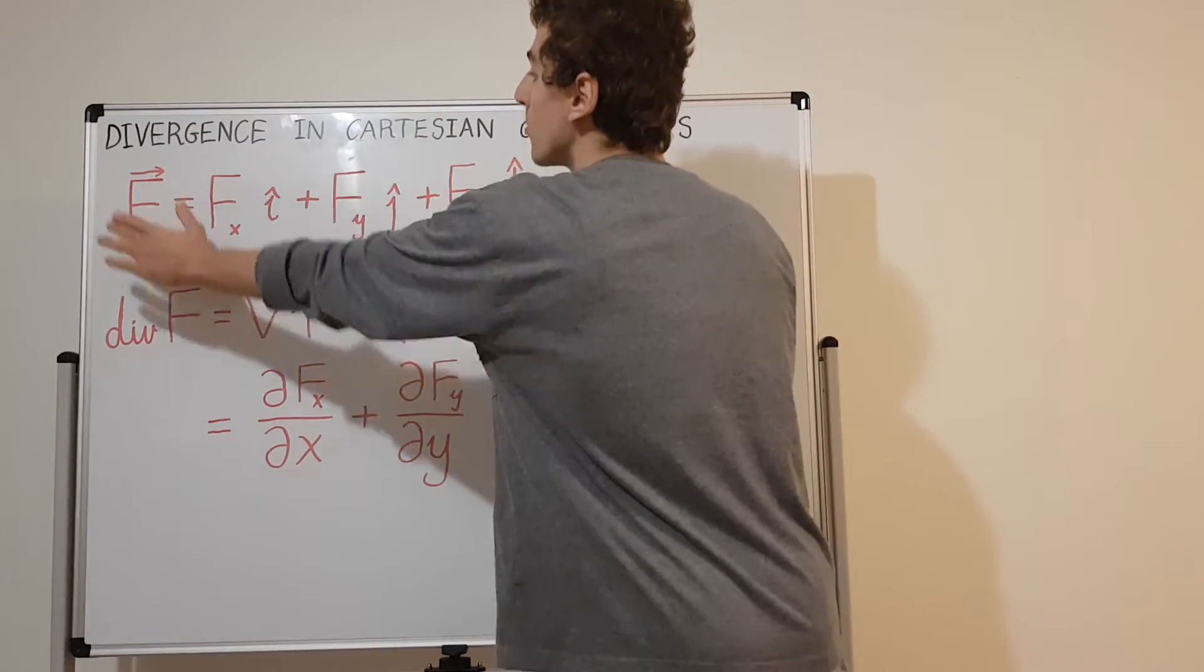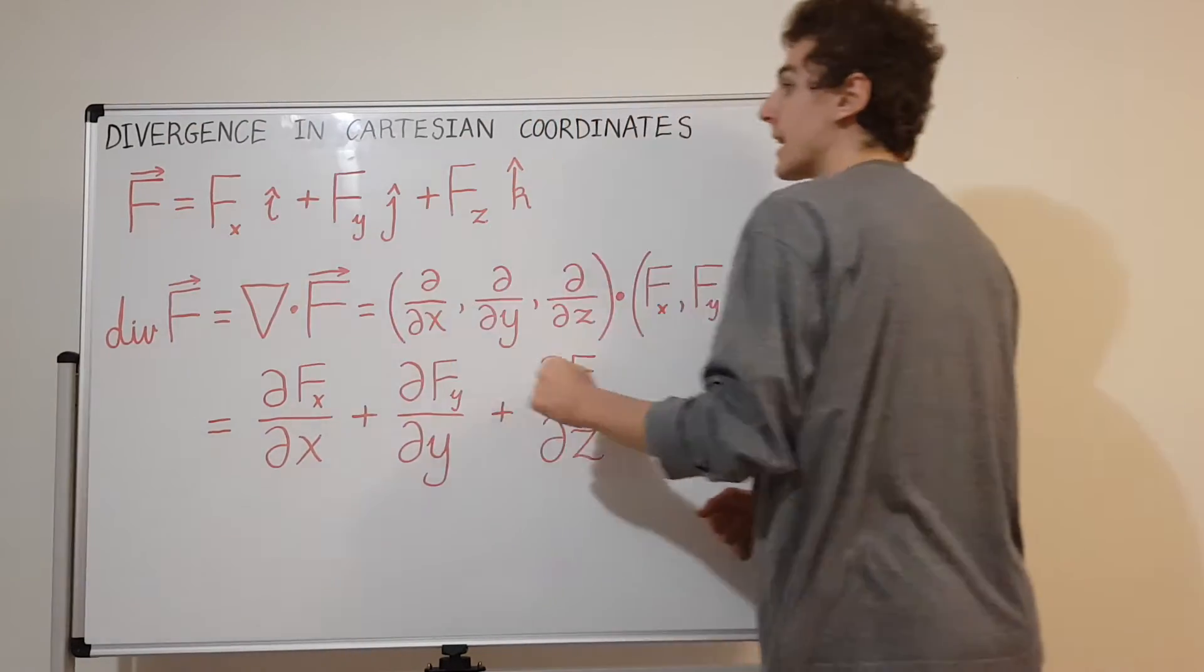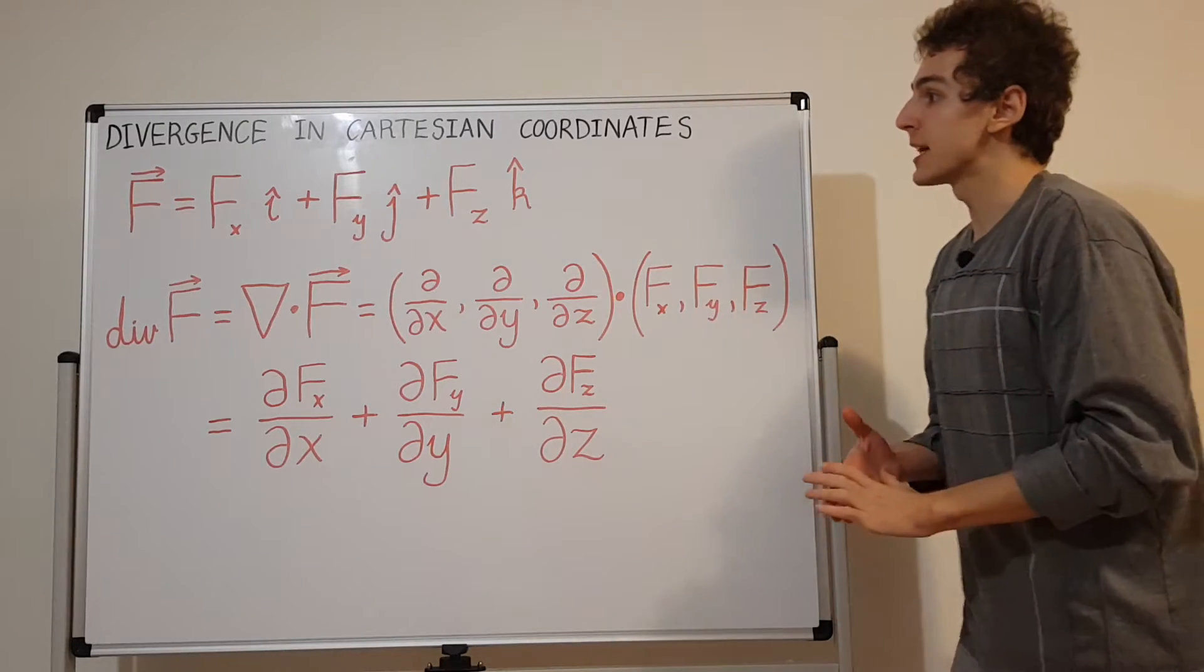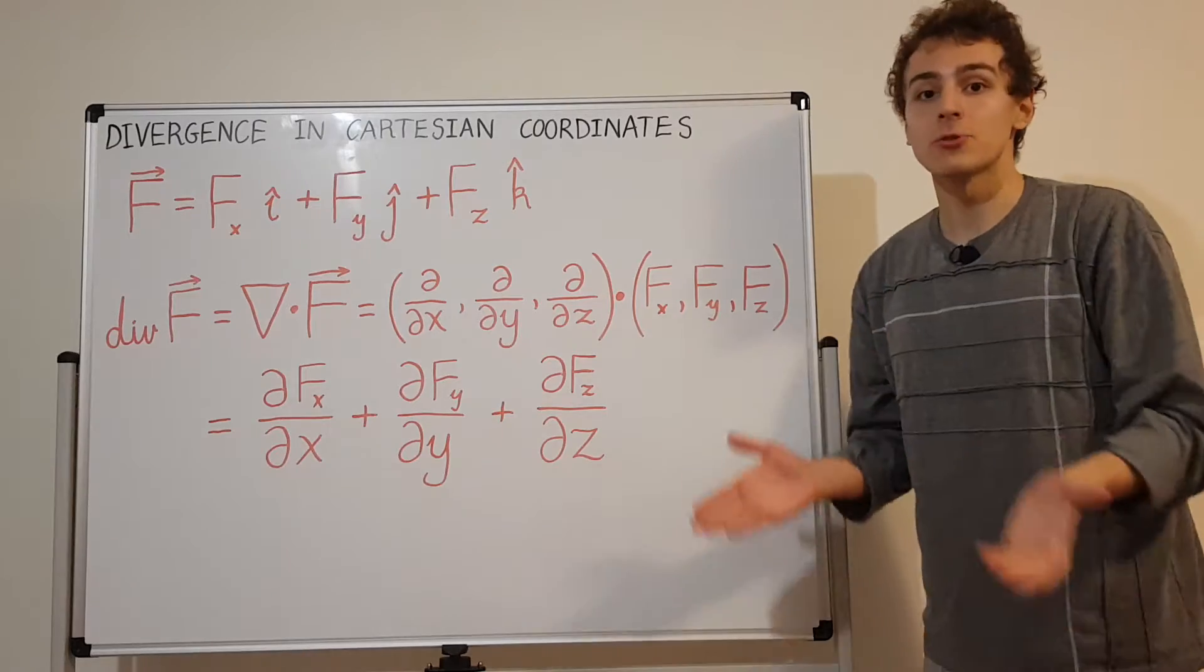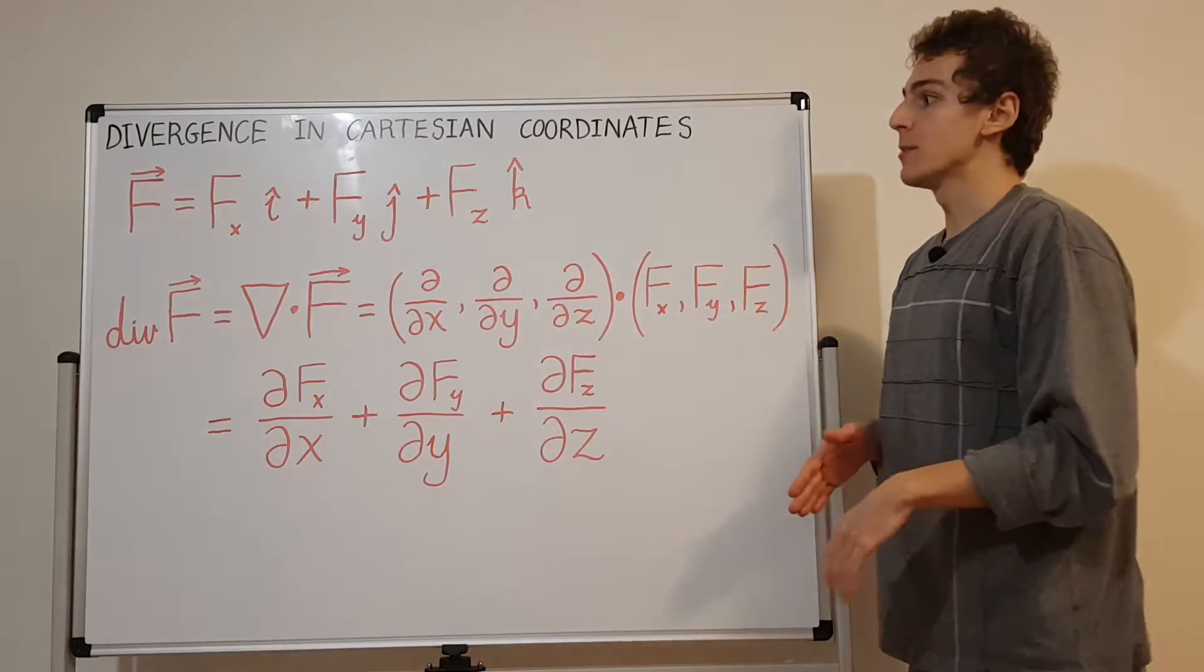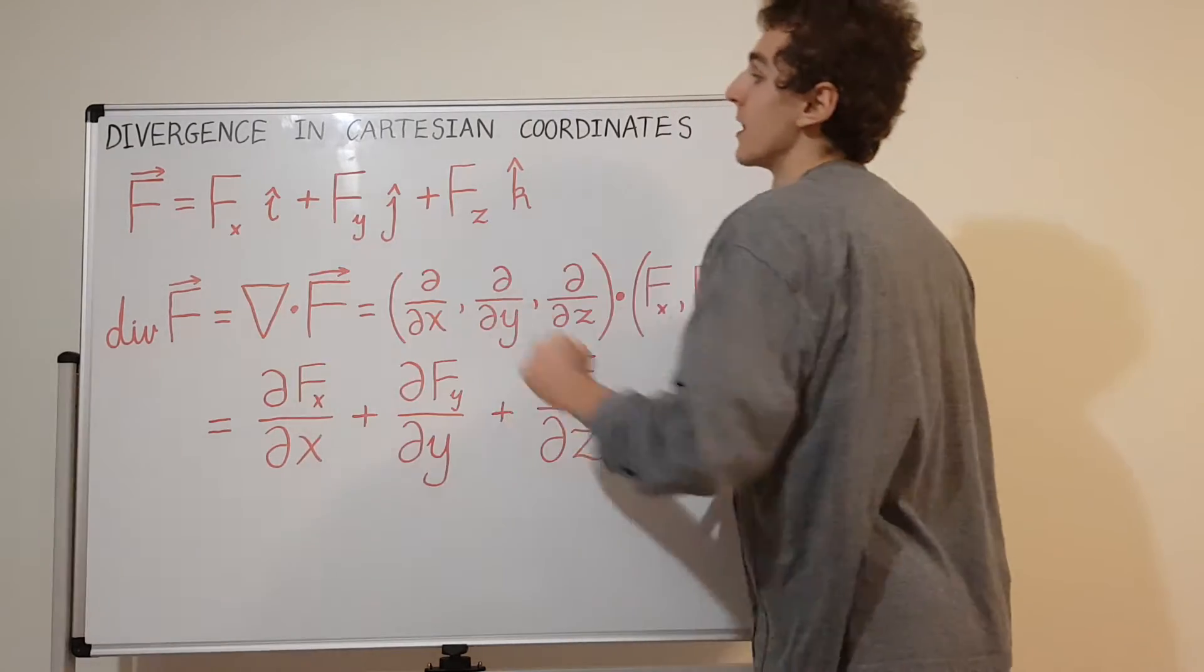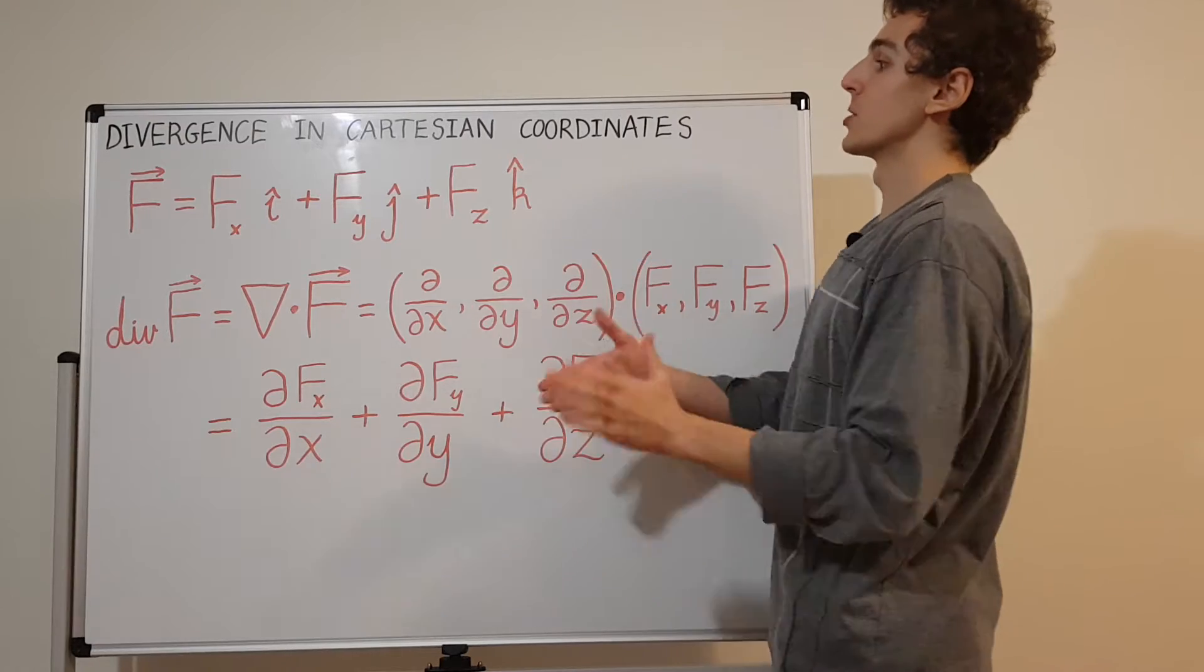This is some general vector field F. In certain situations it can be the velocity or fluid flow. It can be the electric field or the magnetic field. It can be any vector field that lives in three-dimensional space.